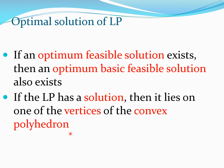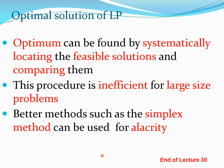For a two-dimensional problem we obtained a simple trapezoid; extrapolating to N dimensions gives a figure called a polyhedron. The optimum can be found by systematically locating the feasible solutions and comparing them — exactly what was done for the problem with two design variables extended to four by adding slack variables. We methodically set two variables to zero (non-basic) and found all basic solutions until all feasible solutions were identified.